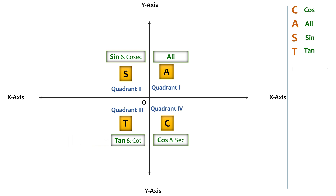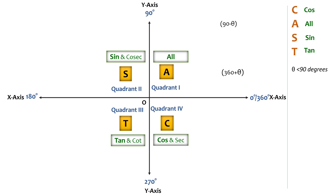We know that theta is an acute angle. The x-axis to the right represents 0°, the y-axis upward represents 90°, the x-axis to the left represents 180°, and the y-axis downward represents 270°. This 0° position also happens to be 360°. Therefore, the angles 360+θ and 90−θ fall in the first quadrant.